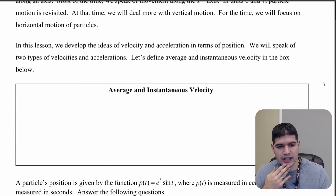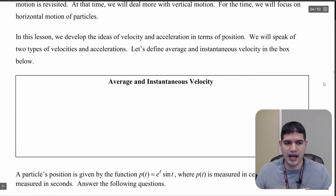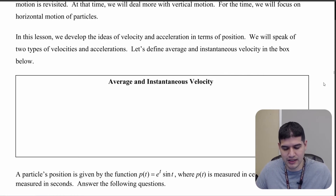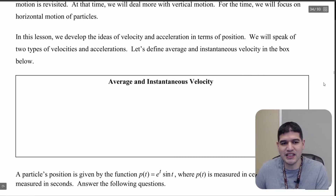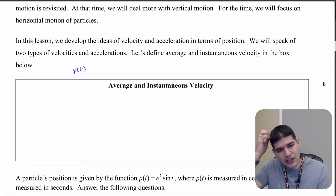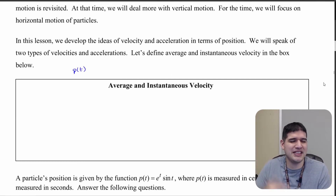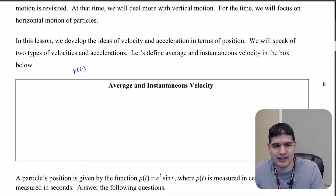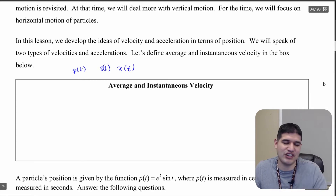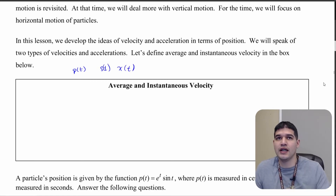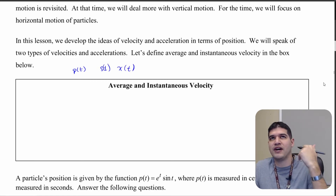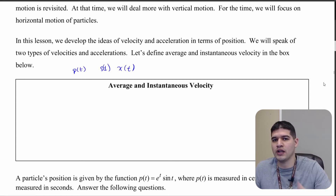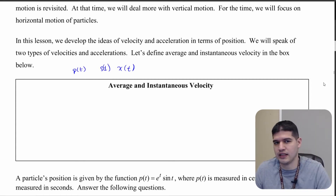We're going to start looking at velocity and average and instantaneous velocity. We're going to be using p of t as the position function. You can also think about it as s of t or x of t — any of these are very common. The function specifies the particle's position on a certain x-axis or line.